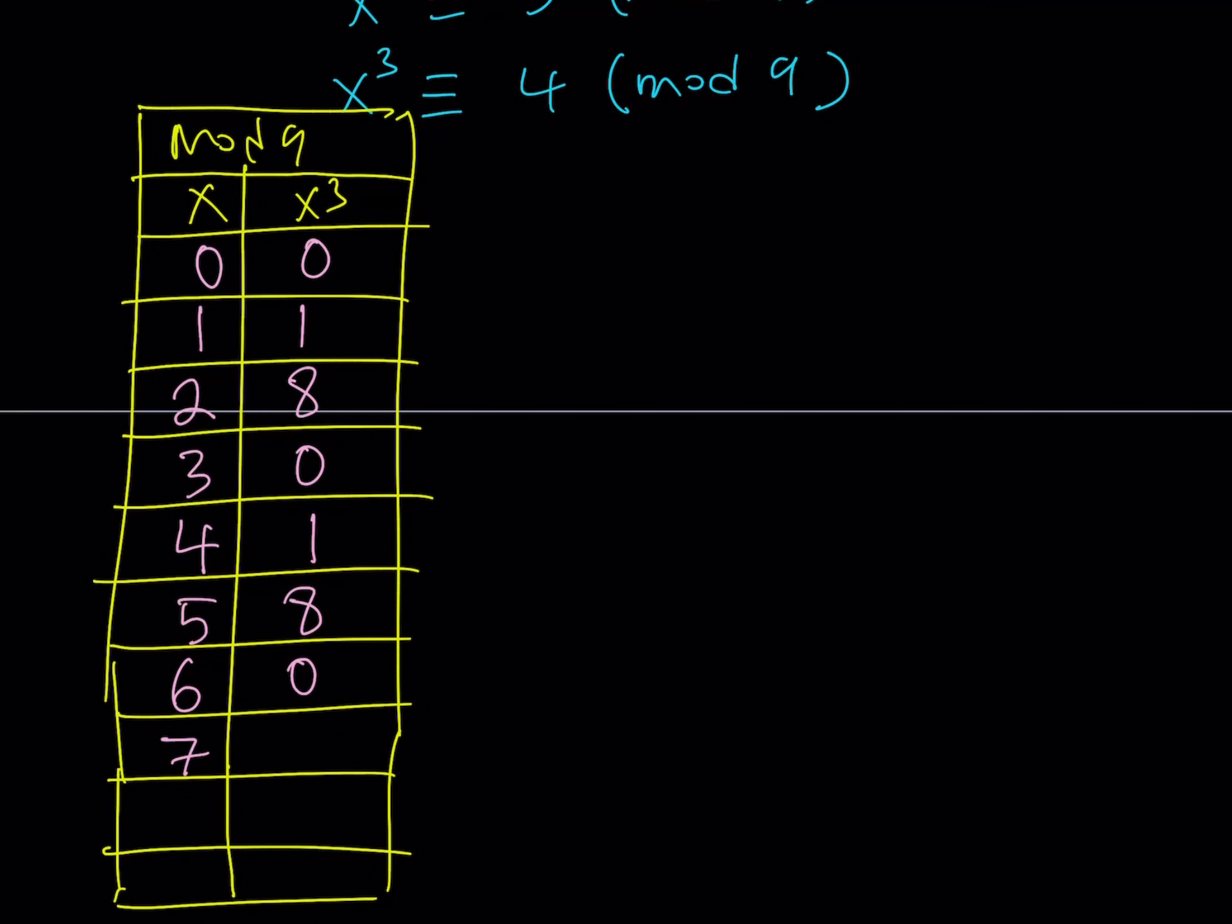7³ is going to be 343. And, that is 1 more than a multiple of 9. Because, 342 is divisible by 9. So, that's 1 mod 9. And, finally, 8. I don't need 9. Because, that's 0. So, I have an extra row. It's also going to be 8.